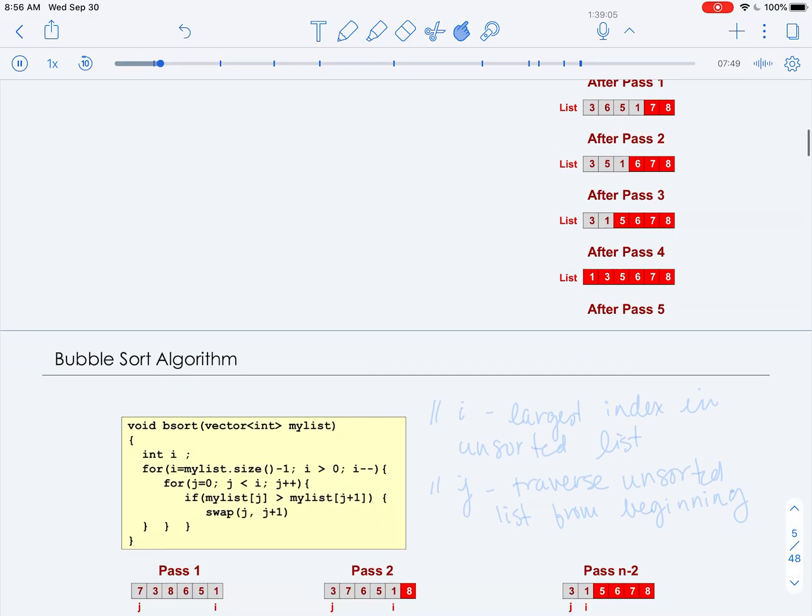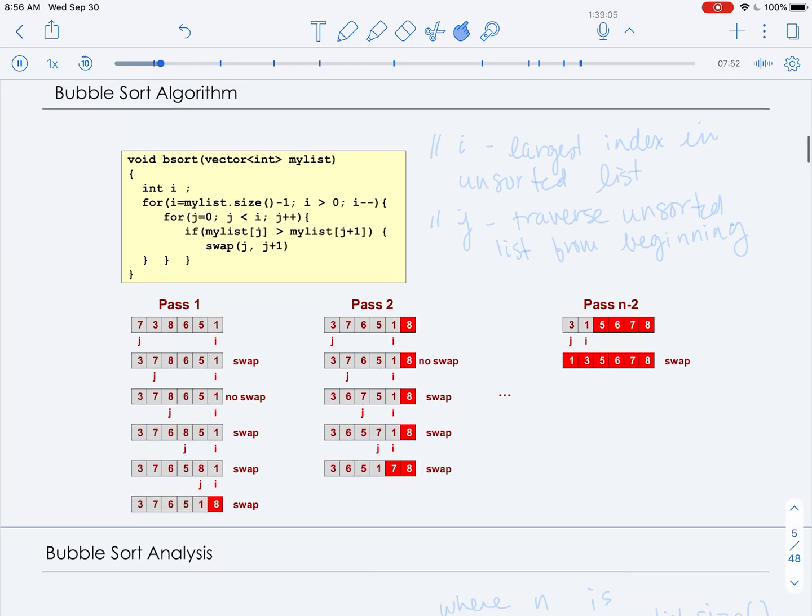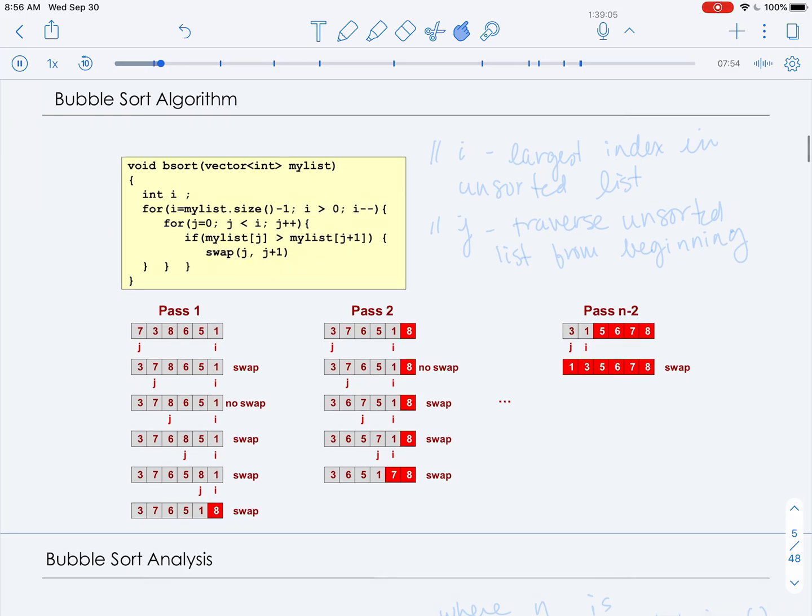Bubble sort works by actually swapping adjacent pairs, as we'll see in the code now. So bubble sort takes as its only argument a vector of integers, and we will discuss how we're using the indices in this implementation.